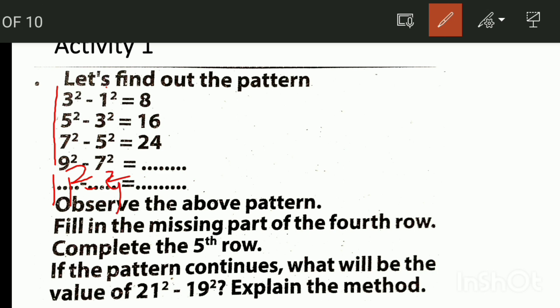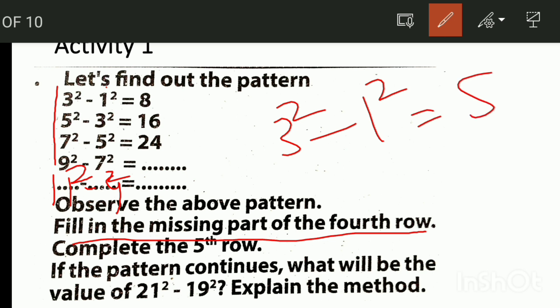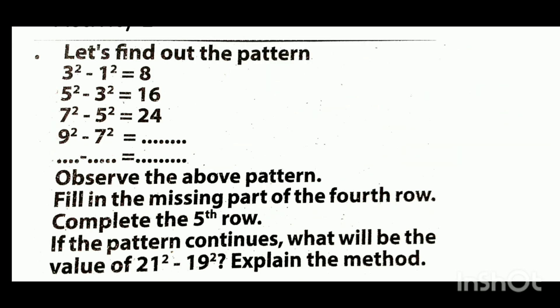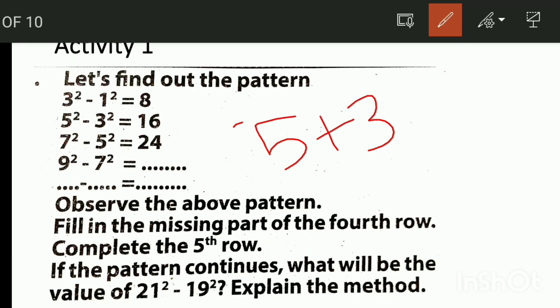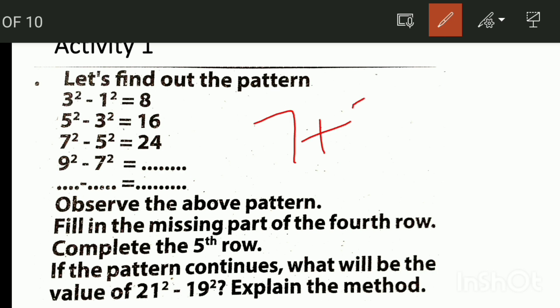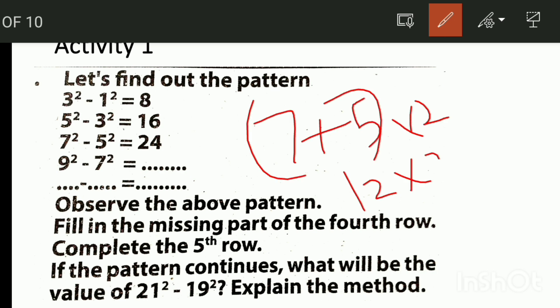Now we are going to complete the missing part of the fourth row. We have a new technique. 3 squared minus 1 squared equals 8. We will add 3 plus 1, then we will add 4. We will add 4. Now we will add 5. 5 plus 3 is 8. 8 is 8. We will add 6, we will add 7. 7 plus 5 is 12. 12 into 2 is 24.